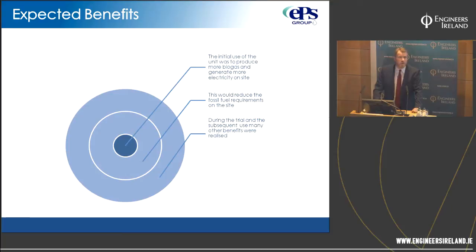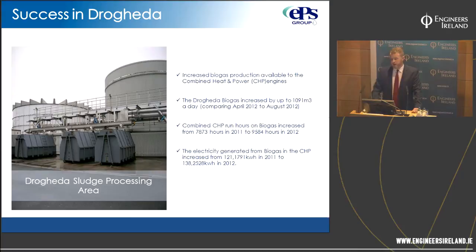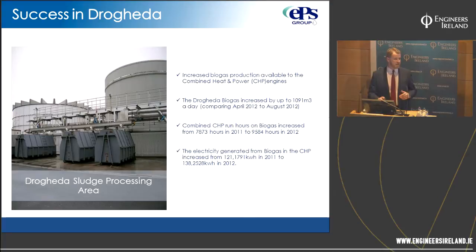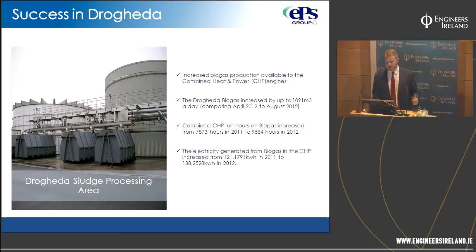What were we hoping to gain? Simply, to produce more biogas — reducing our reliance on fossil fuels, both electricity on site and natural gas. During the trial, many other benefits were realised, some of which we had underestimated. In terms of biogas production, the Drogheda trial was extremely good — over 30% increase in biogas production on site, with the best case figure at 1,091 cubic metres. On average since operation began in 2012, it's been over 30% additional biogas at that plant.